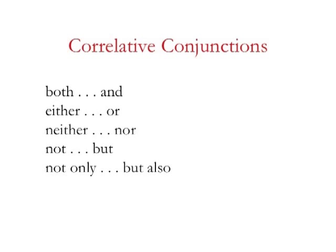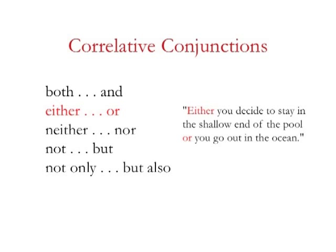Before we close up, let's look at a particularly powerful method of coordination: the correlative conjunction. Correlative conjunctions link balanced words, phrases, or clauses. Think of them as formulas for thought — for making distinctions and making connections. They have great rhetorical force and you should definitely learn how to use them. The major correlative conjunctions in English are: both/and, either/or, neither/nor, not/but, and not only/but also. These pairs can be used to balance independent clauses, as in this quotation by Christopher Reeve: 'Either you decide to stay in the shallow end of the pool, or you go out in the ocean.' Notice how the either/or formula takes two plain independent clauses and makes them into a coherent statement.